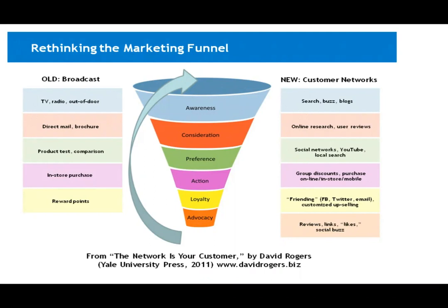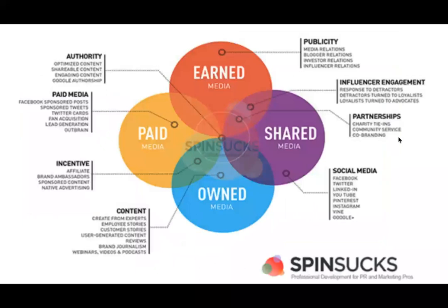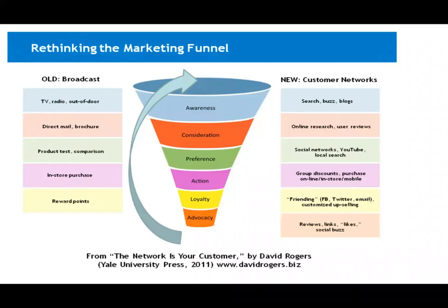This is a particularly complete funnel, and it doesn't necessarily match up to event marketing, but it's useful to think about because it lays out the media. I want us to think about the right side — search, online, social networks, group discounts, friending, and reviews — in terms of the PESO model. Earned media, paid, shared, owned. So when we come back to this funnel, we can think about where something fits. Earned media — we can think about search engine there because we're earning rank. Social networks are shared. We can place all of these different types of media somewhere within the PESO model.